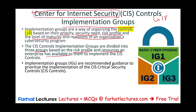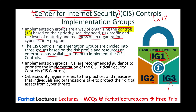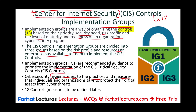Implementation groups are recommended guidance to prioritize the implementation of the CIS critical security controls. For example, my company may only need to implement controls that belong to IG1, while a national security or critical government organization may need IG3. The term 'cybersecurity hygiene' refers to the practices and measures that individuals and organizations take to protect their digital assets from cybersecurity threats. So what is your cybersecurity hygiene — IG1, IG2, or IG3? All you need to know now is what IG1, IG2, and IG3 are.